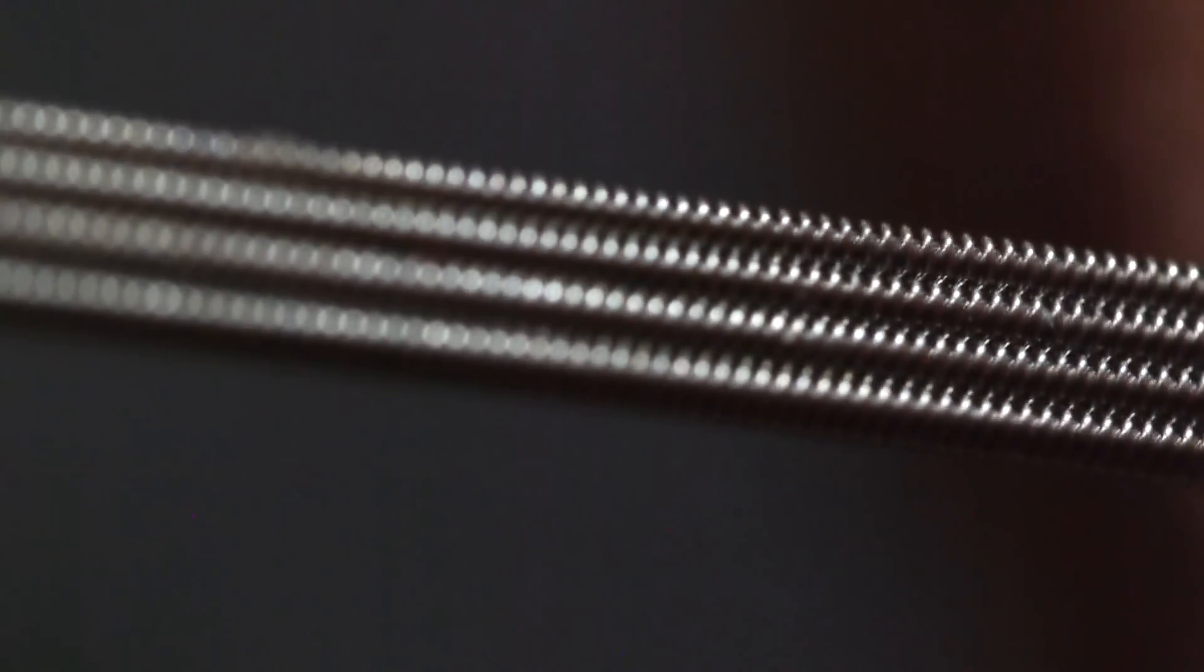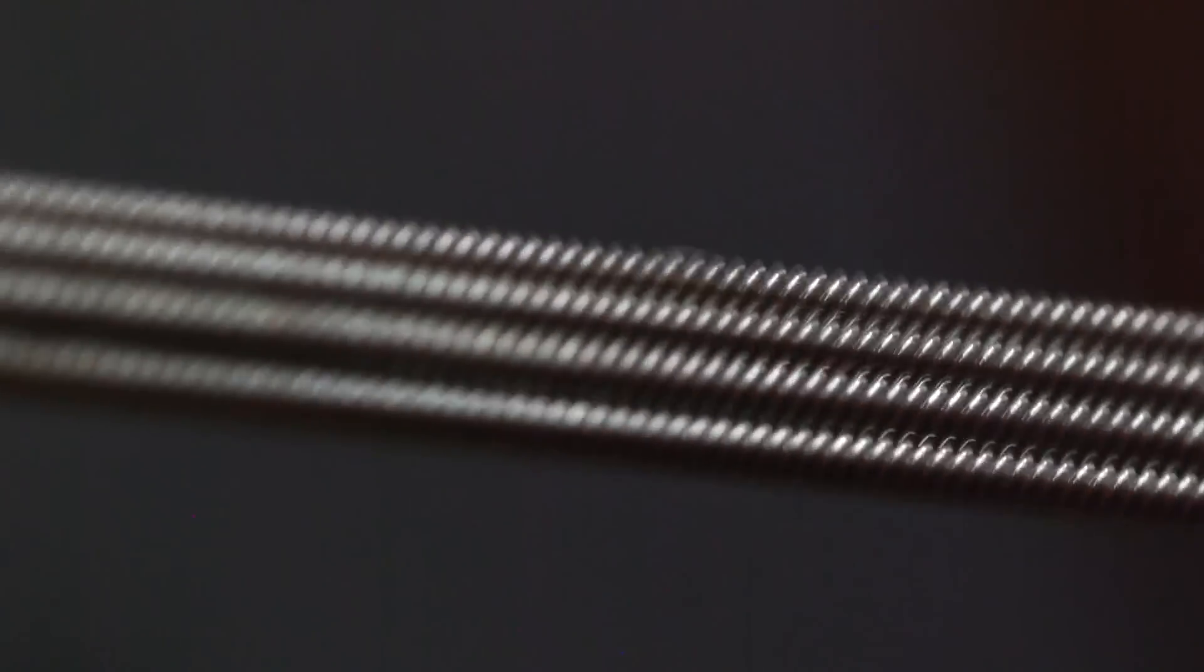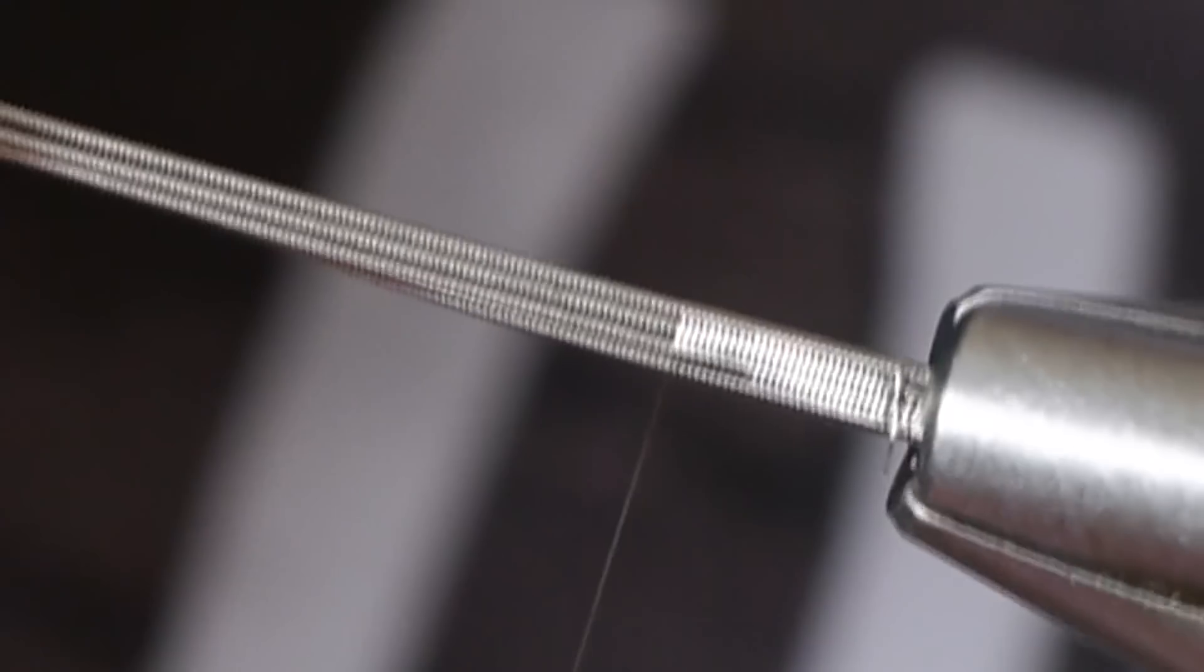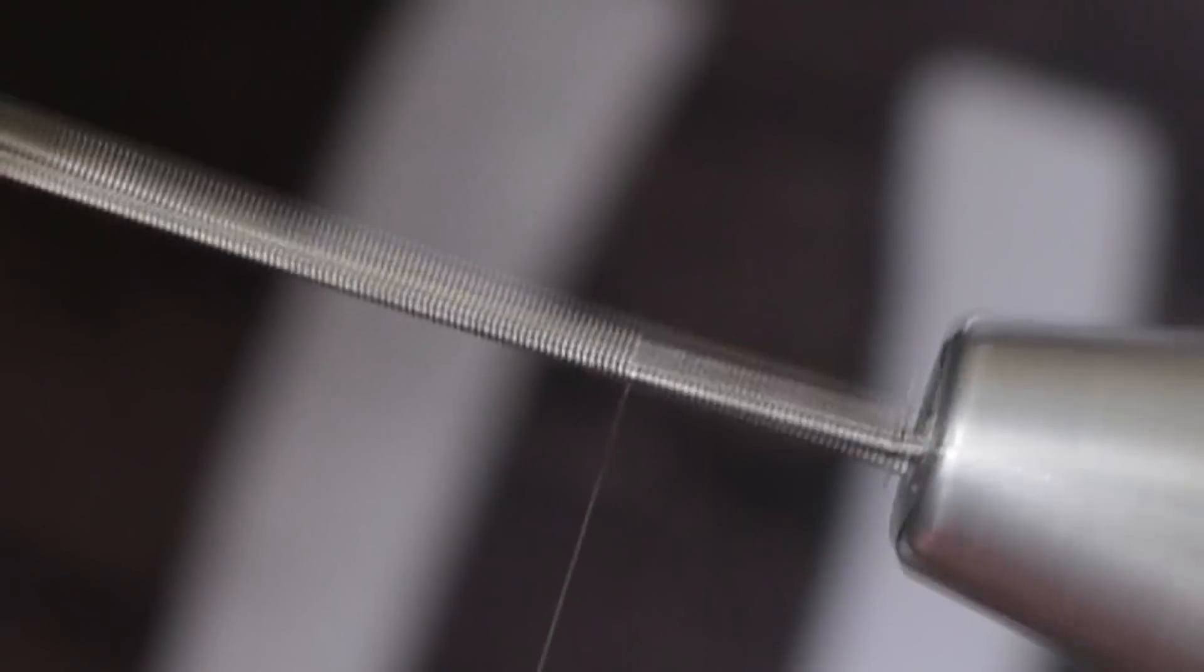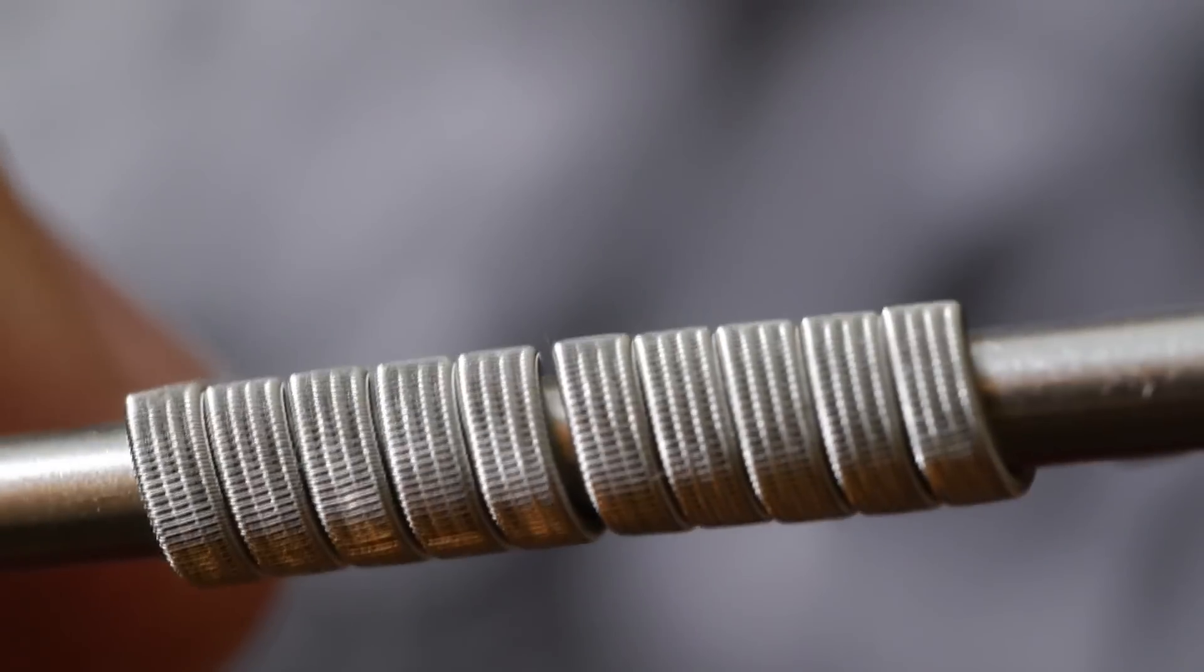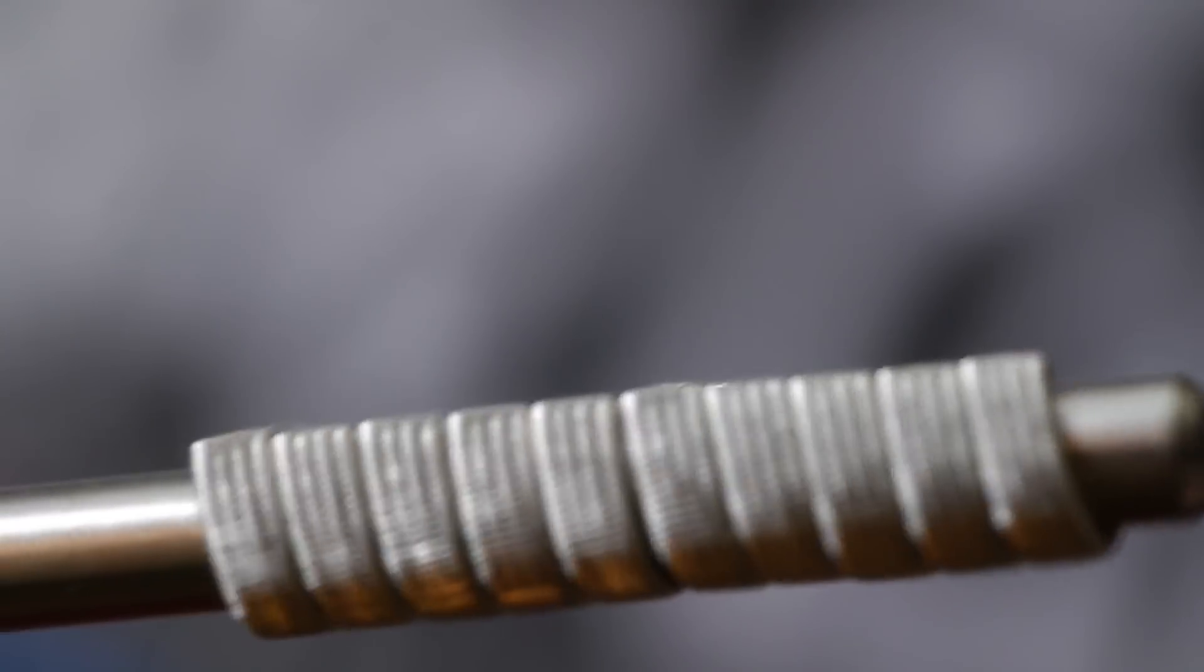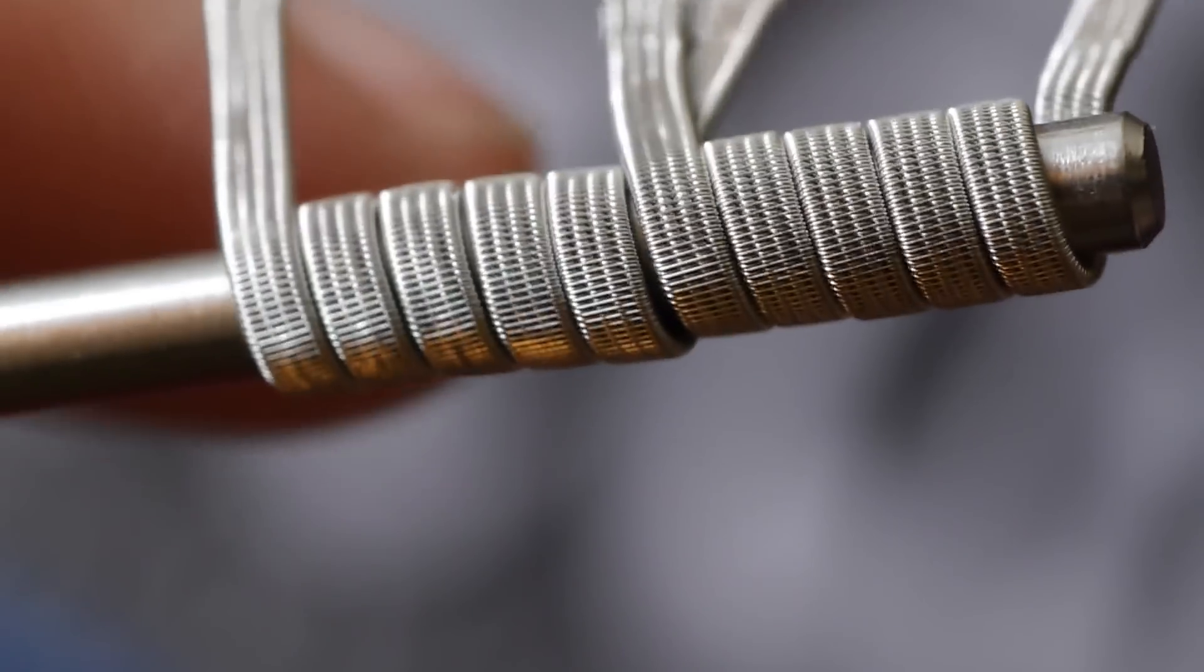If you guys don't know what staggered fuse claptons are, it is a core wire with a smaller gauged wire wrapped around it spaced. Two or more of those core wires with the staggered wraps around them, fusing them all together between those wraps to create a flat, wide, multi-core build.